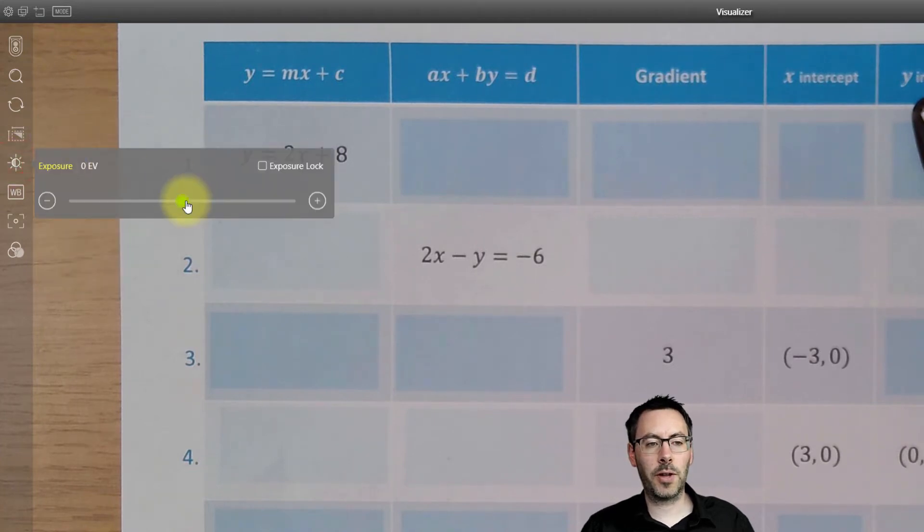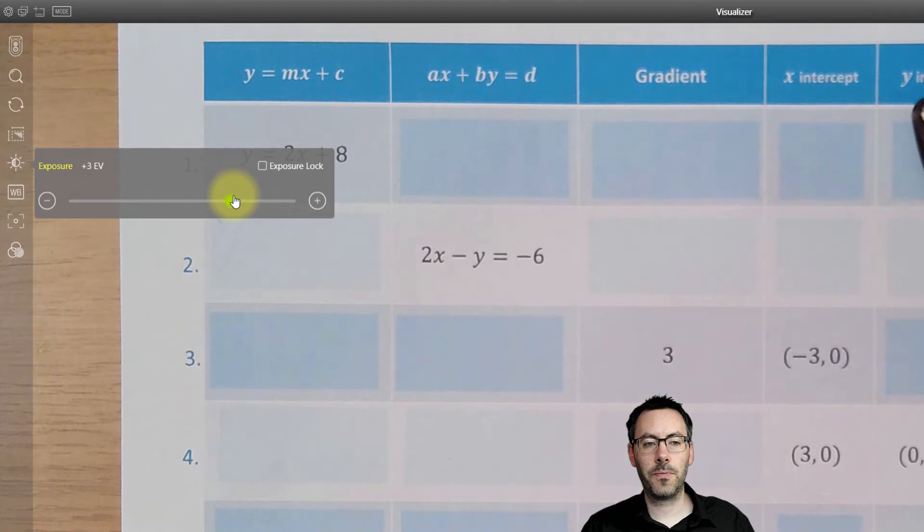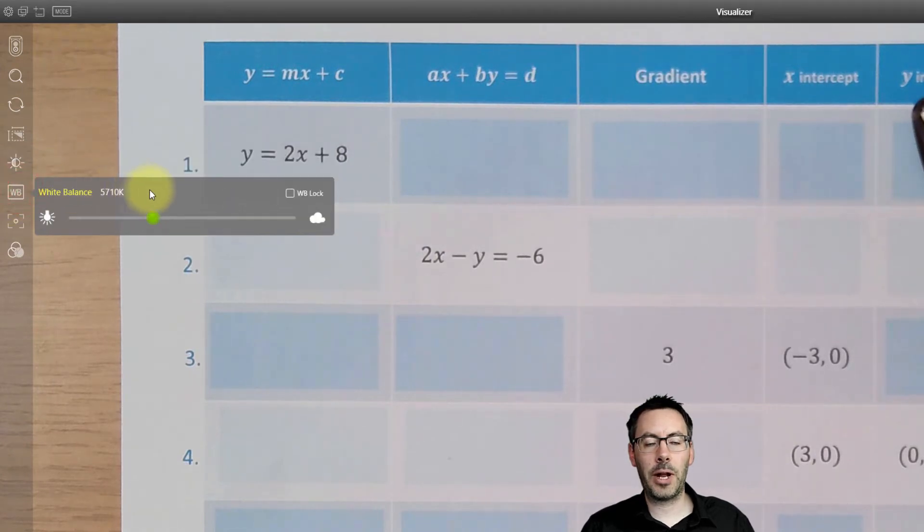You've got an exposure button, so if your image is a bit dark, you can make that brighter using the exposure as you need to. Then we've got a white balance option which will automatically read the white balance, but if you need to change that, you can make it warmer or cooler. Once you move it, the white balance lock goes on. If you take that off, it will find the automatic white balance again.